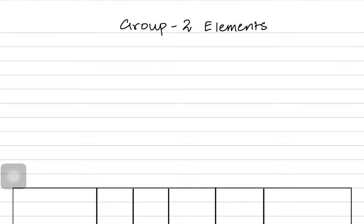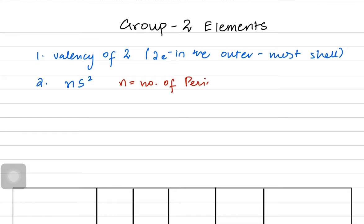When we talk about Group 2 elements, we know they have a valency of two, which means there are two electrons in the outermost shell. Since we're considering everything in terms of AS level, their configuration always ends at Ns2, where N equals the period number and S means the S subshell with two electrons.